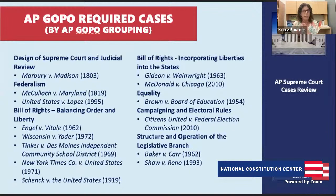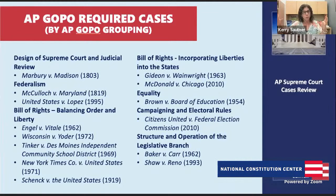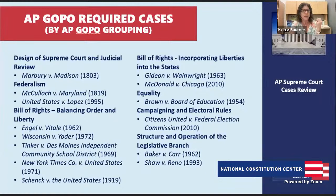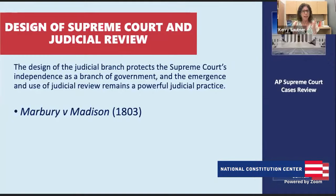The first case looks at the Supreme Court and judicial review. The AP framework's big idea here is the judicial branch's independence from the other two branches — the executive and Congress — and the concept of judicial review. The broader idea connecting multiple court cases is separation of powers: separating power across three branches ensures each branch has independence and can check the others.